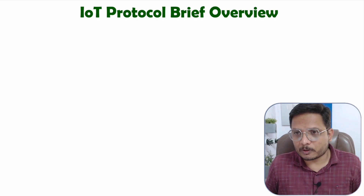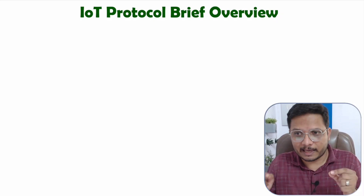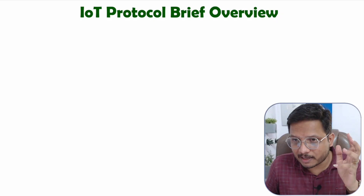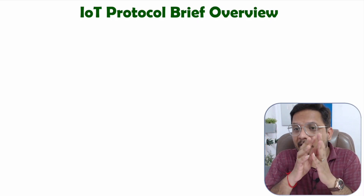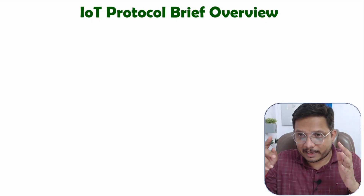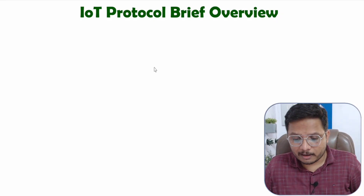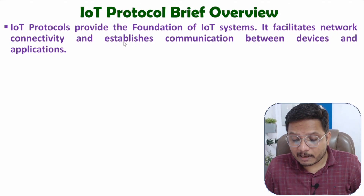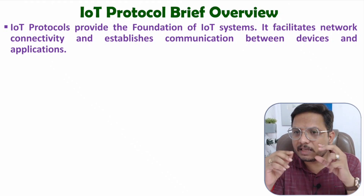Now I will explain you a brief overview regarding IoT protocols. IoT protocols are providing a path of communication between devices and things. In IoT, we have things — those things are sensors, actuators and smart devices. Things interact with the IoT server which is on the internet. So for communication, we will be using the internet, and that communication establishment is defined by IoT protocols. IoT protocol provides the foundation of an IoT system — it facilitates network connectivity and establishes communication between devices and applications.